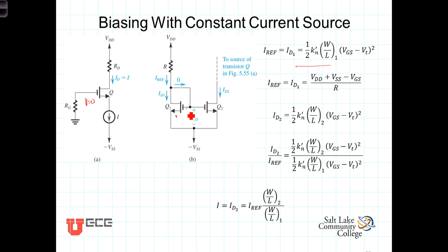So I reference then can also be found by taking V_DD minus V source, so it's the full separation of voltage across the entire circuit, minus V_GS. You'll see that the voltage here is V_GS, so the voltage across this resistor is V_DD minus V_SS, so plus V_SS minus V_GS divided by R.